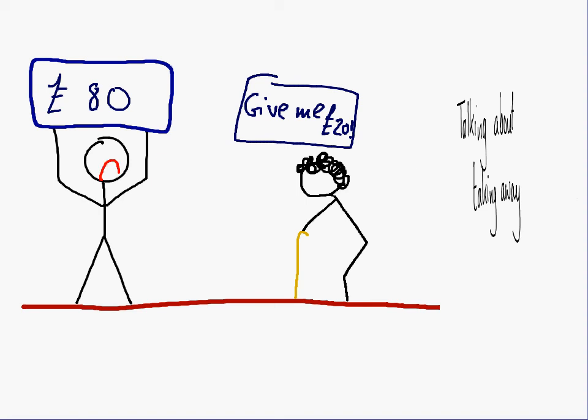Now, notice how we talked about taking away there. We said that his gran had taken away from Fred, so if I was going to write this out as a little mathematical expression. Presumably, I'd write this, wouldn't I? And that's fine.